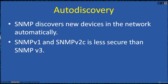SNMP auto discovery discovers new devices in the network automatically. SNMP version 1 and version 2c present security risks as SNMP read communities are broadcast in clear text. SNMP v3 mitigates this risk, and care should be taken when using the automatic discovery feature.